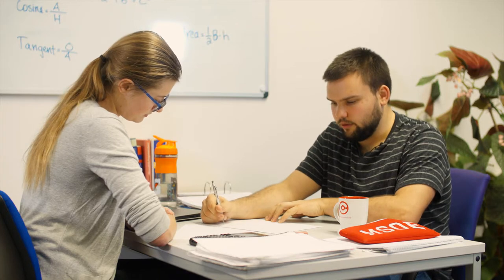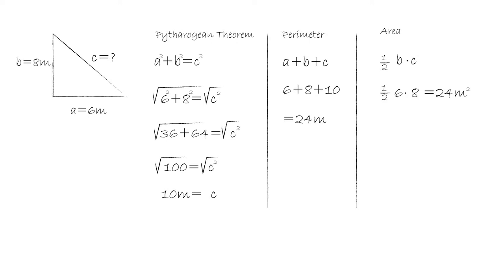Let me give it a try. So, we have 1 half times the base, which is 6, times the height, which is 8, which equals 24 meters. Don't forget the squared. Okay.